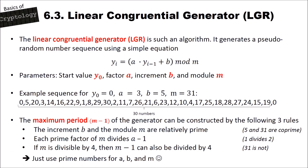As an example, let's have a look at the linear congruential generator, or LCG, which is a random number generator that generates a pseudorandom sequence using a simple equation: y_i = (a × y_{i−1} + b) mod m.